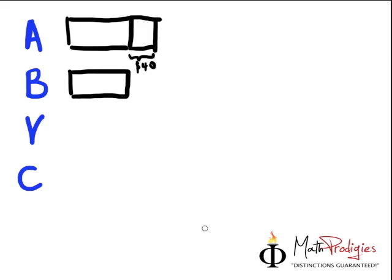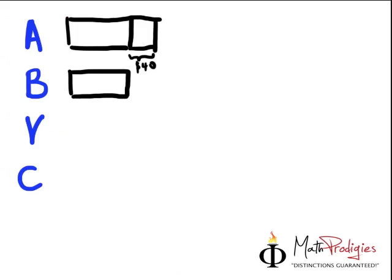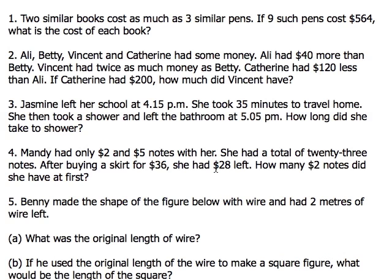This little thing is $40. Next part, it says Vincent had twice as much money as Betty. So let's look at how much Betty has. Betty has one unit, so if it's twice, twice means two times.